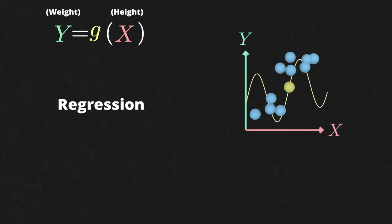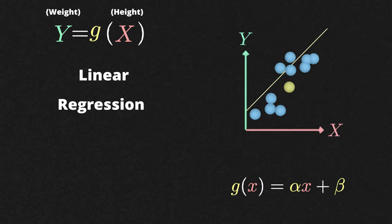Finding the right function g is called regression, and the easiest way to do this is to assume that this function g is a linear function, hence the name linear regression.